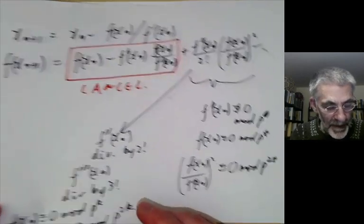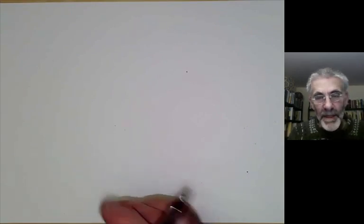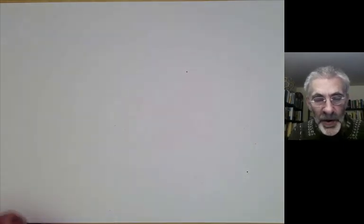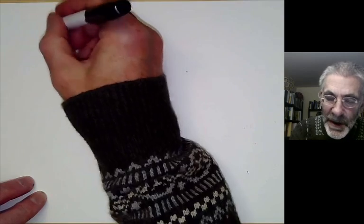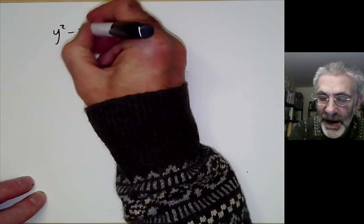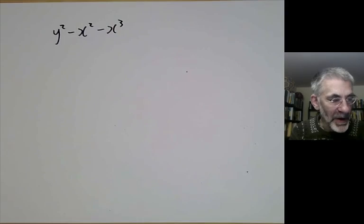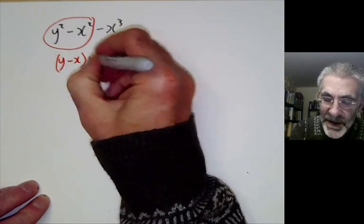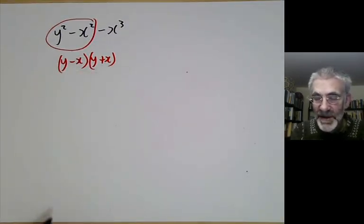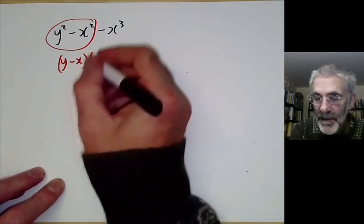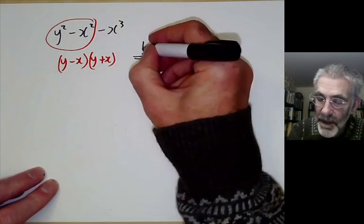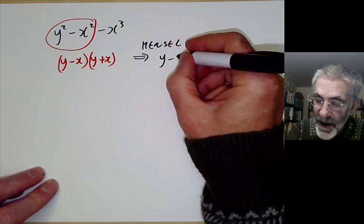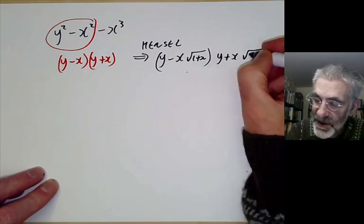Let me finish with a couple of examples of Hensel's Lemma for power series rather than over the p-adics. Take the polynomial y² - x² - x³, thought of as a power series. Looking at the degree-two terms, it factorizes as (y - x)(y + x). By applying Hensel's Lemma for power series, this factorization of the degree-two terms lifts to a full power series factorization: (y - x·√(1+x))·(y + x·√(1+x)).